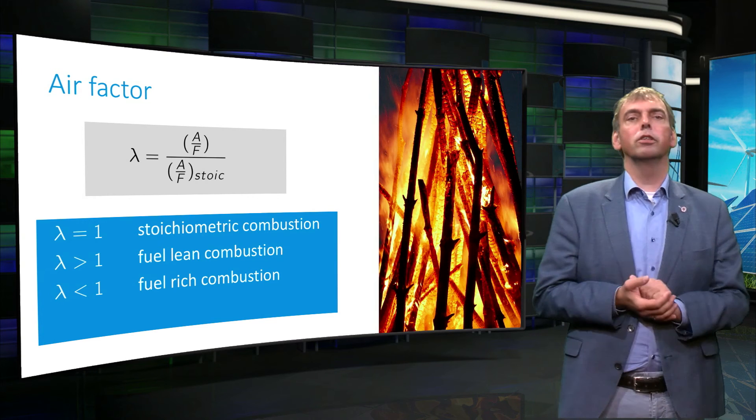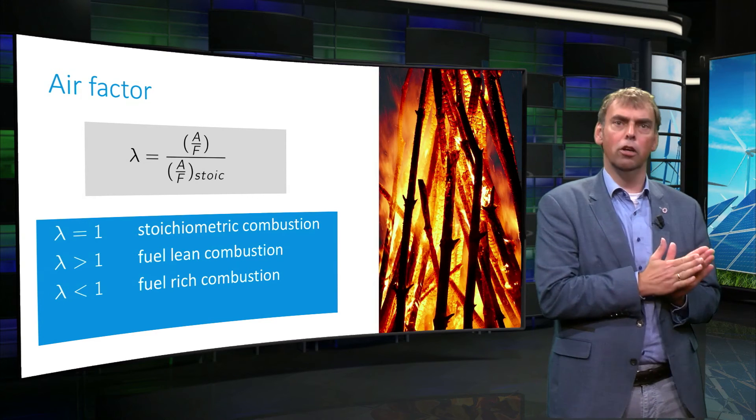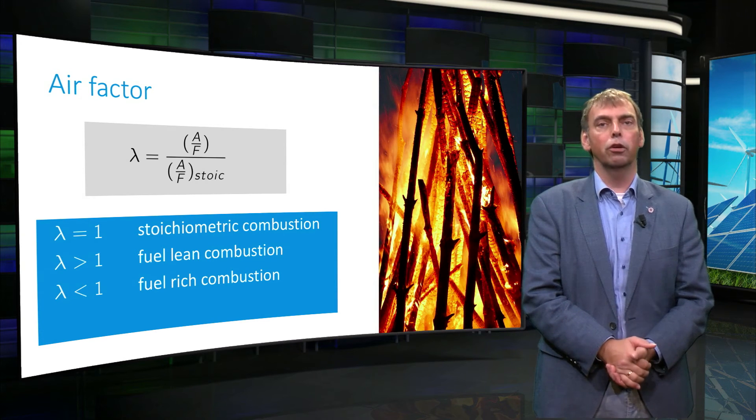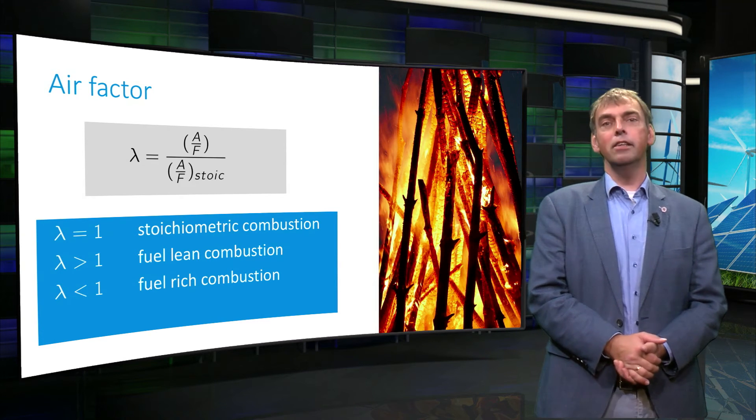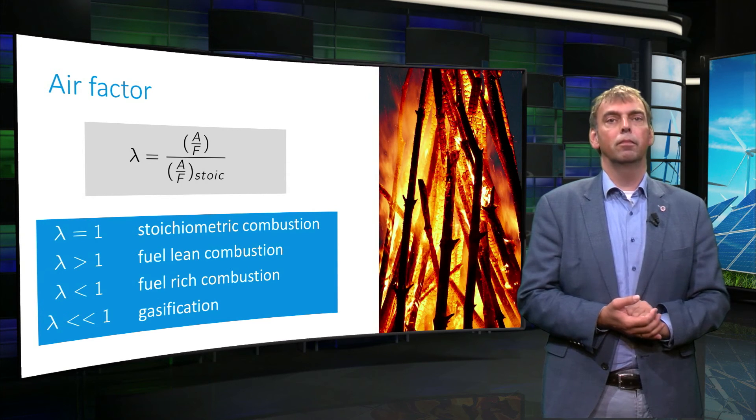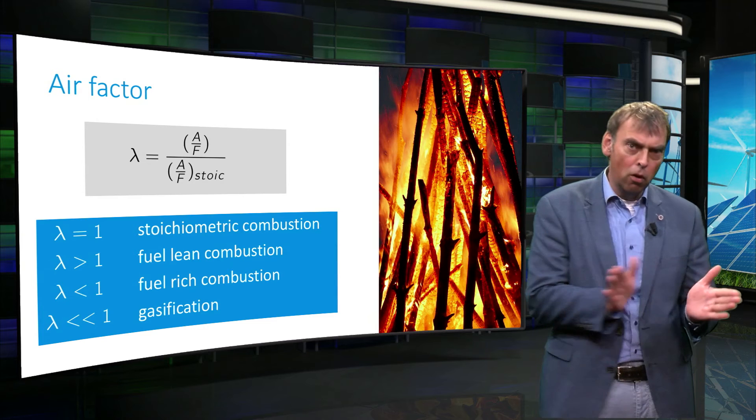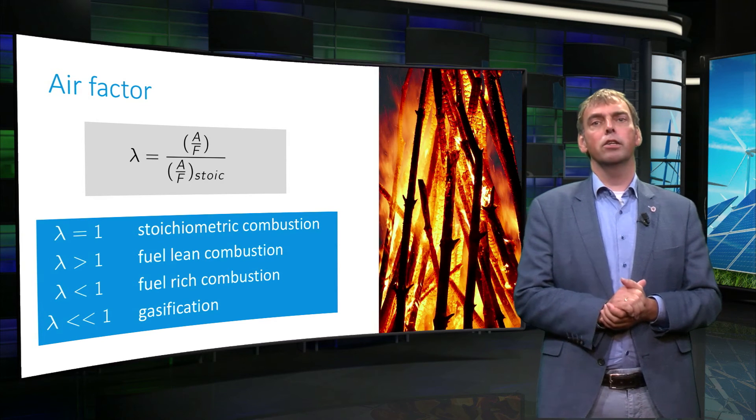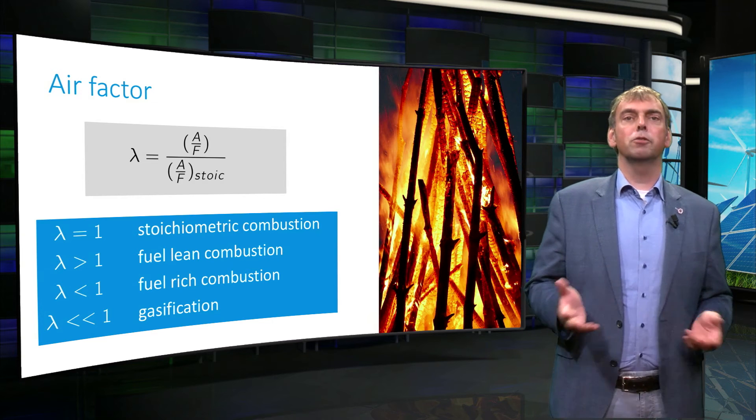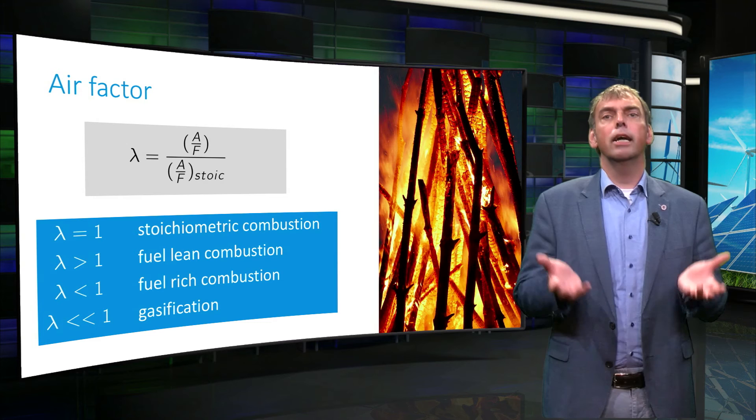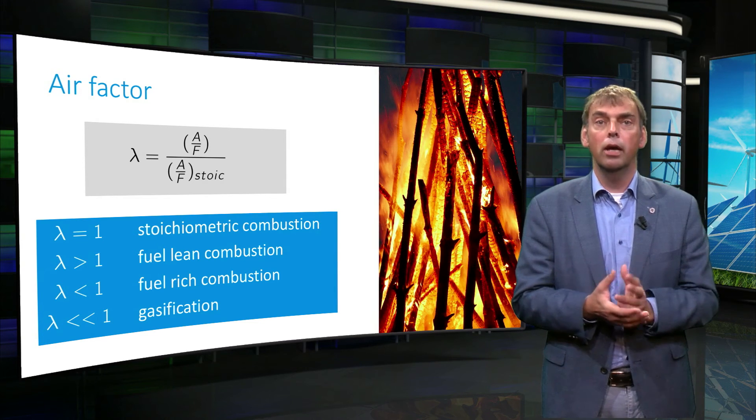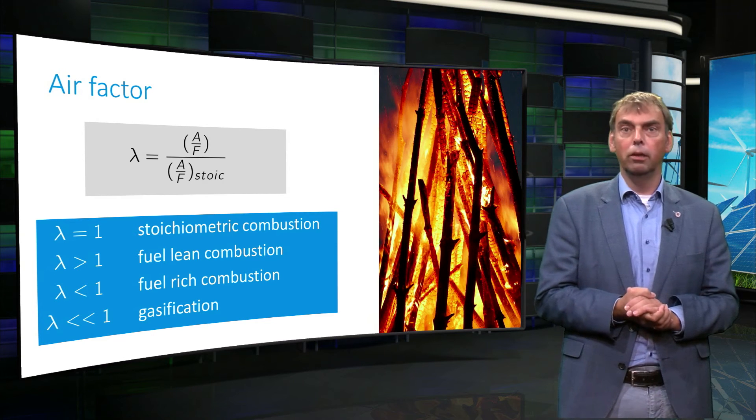Fuel-rich combustion takes place when not enough oxygen is available to completely oxidize the fuel elements to their fully oxidized products. In this case, flue gas will contain practically no oxygen. In case lambda is much smaller than 1, this characterizes this process as gasification. The gaseous end product of such process is complex and still contains some chemical energy in molecules like CO and hydrogen that are not completely oxidized.